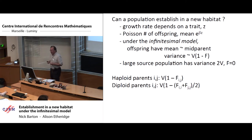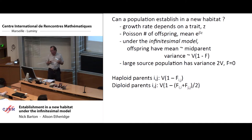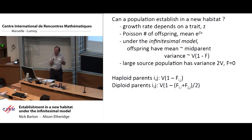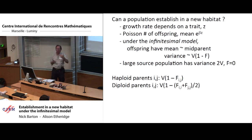Under the infinitesimal model, offspring have a mean at the average of the two parents, and their genetic value is normally distributed with variance b*(1-f), where b is a characteristic of the source population. We assume a very large source population with a fixed additive genetic variance 2V, meaning the segregation variance within a family will be V. In the simulations we're simulating diploid parents.